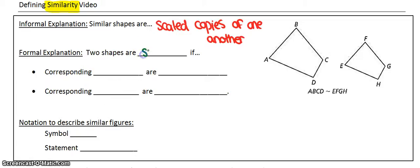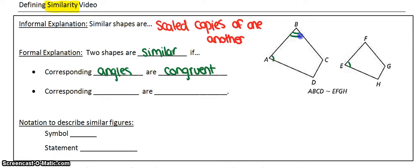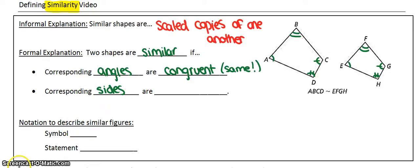More formally, two shapes are similar if corresponding angles are congruent. Because scaled copies are the exact same shape, angle A would be the same as angle E, B the same as F, C the same as G, and H the same as D. So all the angles are the same — it's just one is bigger than the other. They're scaled versions. So corresponding angles are congruent, which means they're exactly the same, whereas corresponding side lengths are proportional.